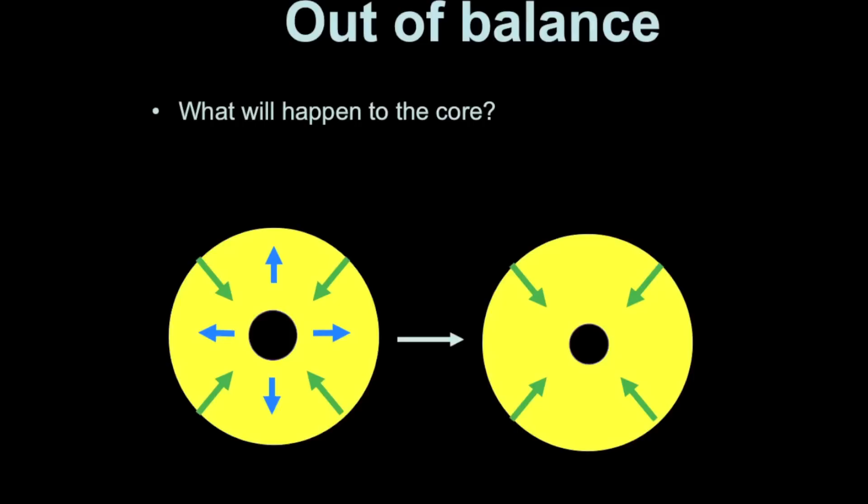The core will be completely helium at this point. That helium is not yet fusing into new elements, but it's still extremely hot. Gravity will crush the helium atoms into an even smaller, denser volume. As that occurs, the helium core will get hotter and denser, and will eventually begin fusing — but not yet.